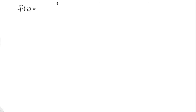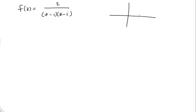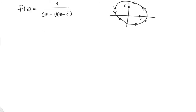Let's do some examples. One of my favorite functions is f(z) equals 1 over (z minus 1)(z minus i). These are the two prototypical singularities in the plane — one at z=1 and one at z=i. I want to do a contour integral that encloses both of those. I can either expand a Laurent series around both or compute the residues by integration using Cauchy's integral formula.